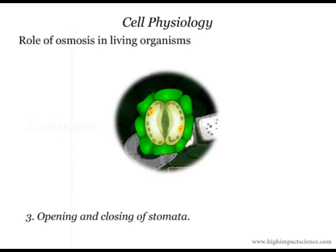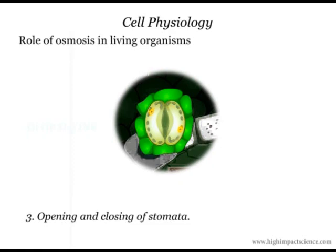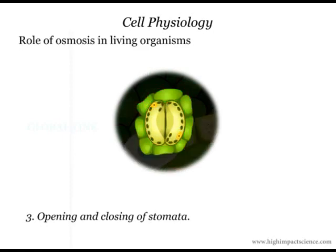Opening and closing of stomata. The guard cells synthesize glucose through the process of photosynthesis in the presence of light. As glucose accumulates in the guard cells, their osmotic pressure increases and this enables them to draw water from adjacent cells by osmosis. This action results in the guard cells becoming turgid, causing opening of the stomata. At night, guard cells do not photosynthesize and therefore glucose levels go down, leading to a lowering of osmotic pressure and closing of stomata.